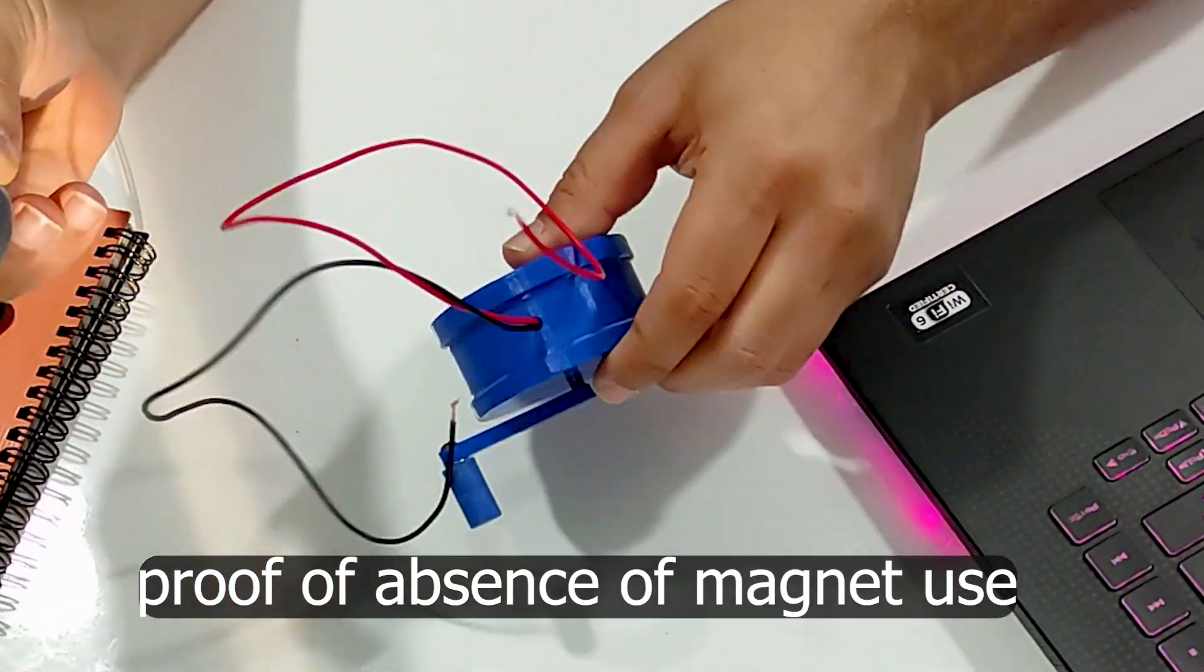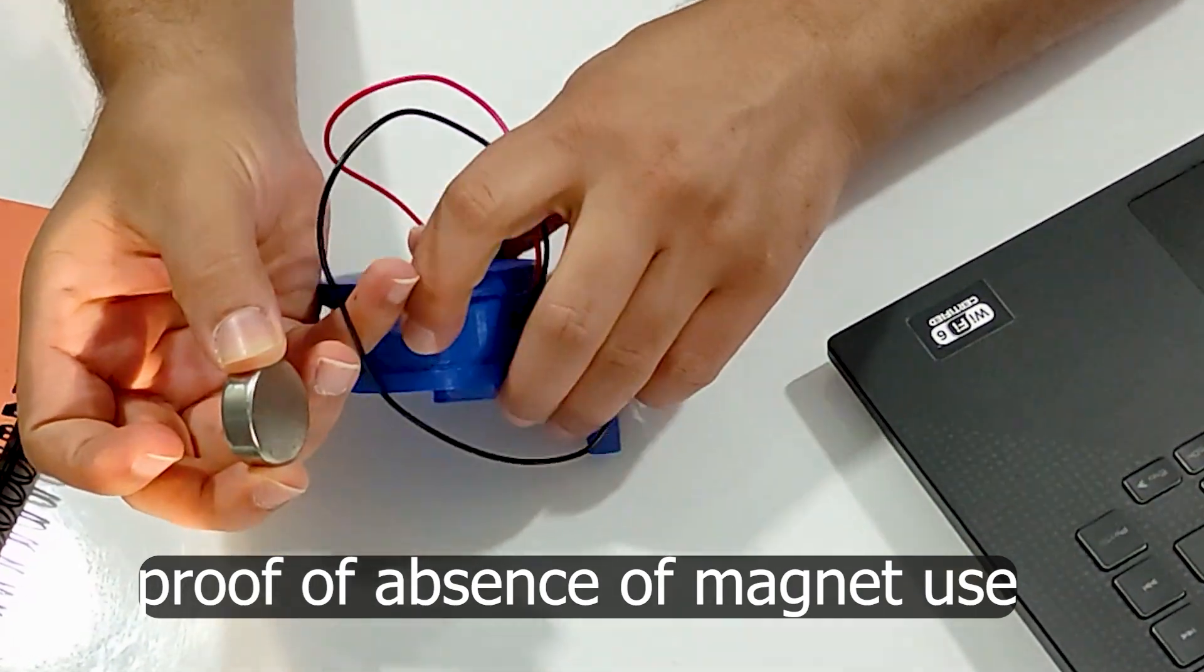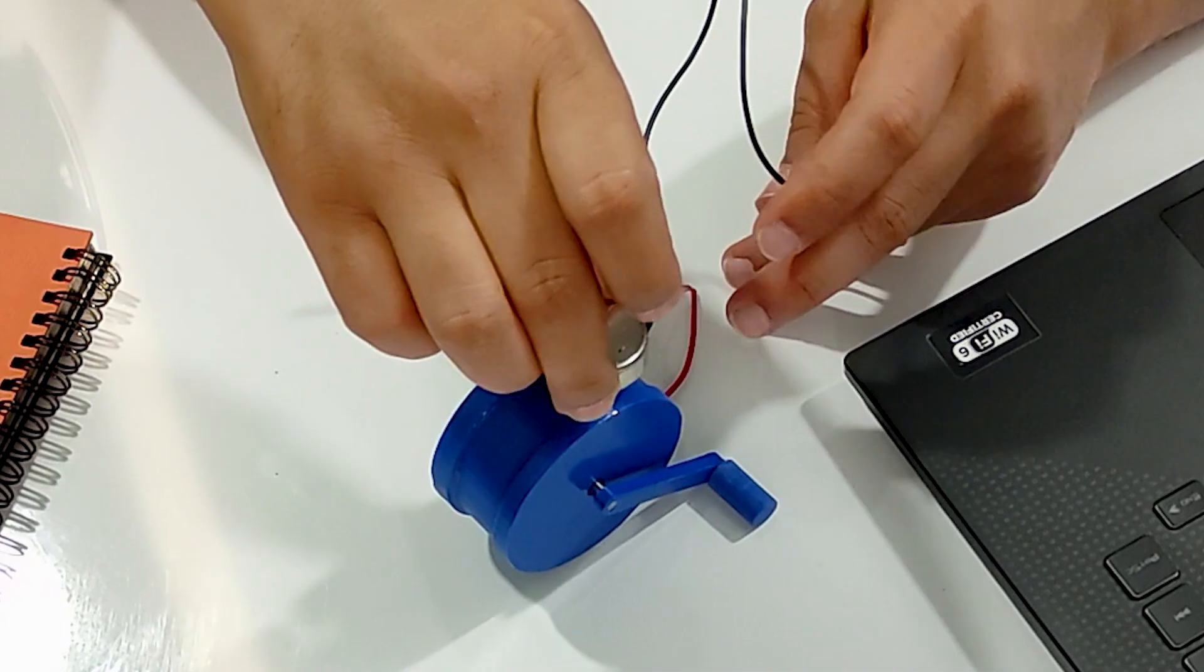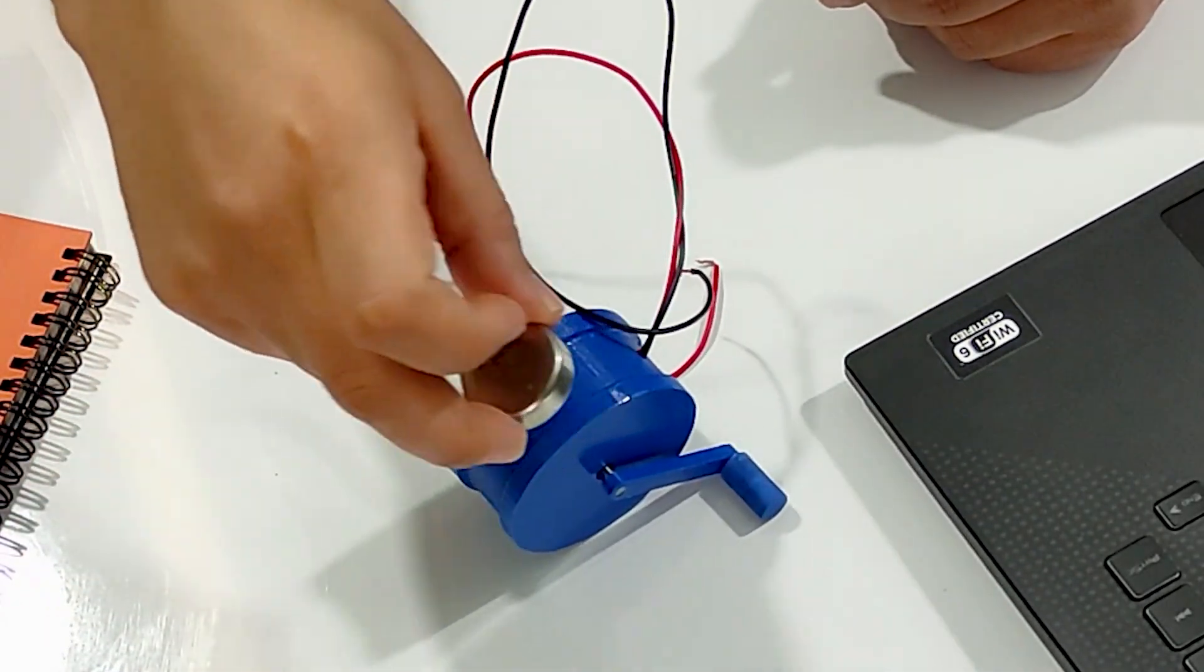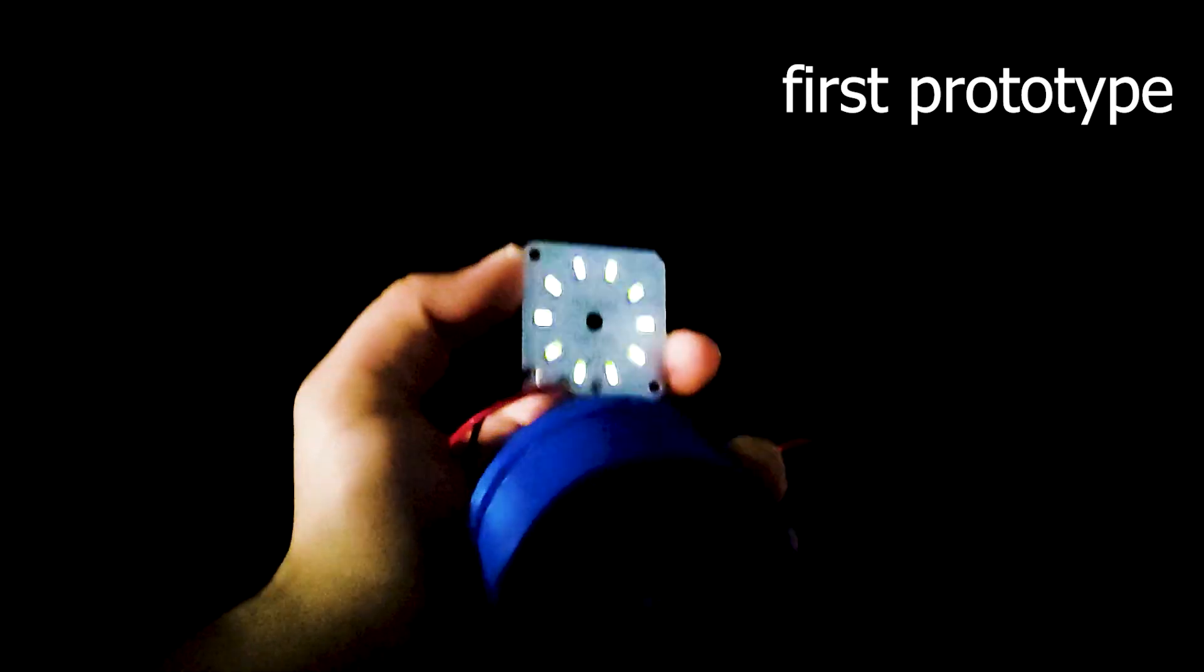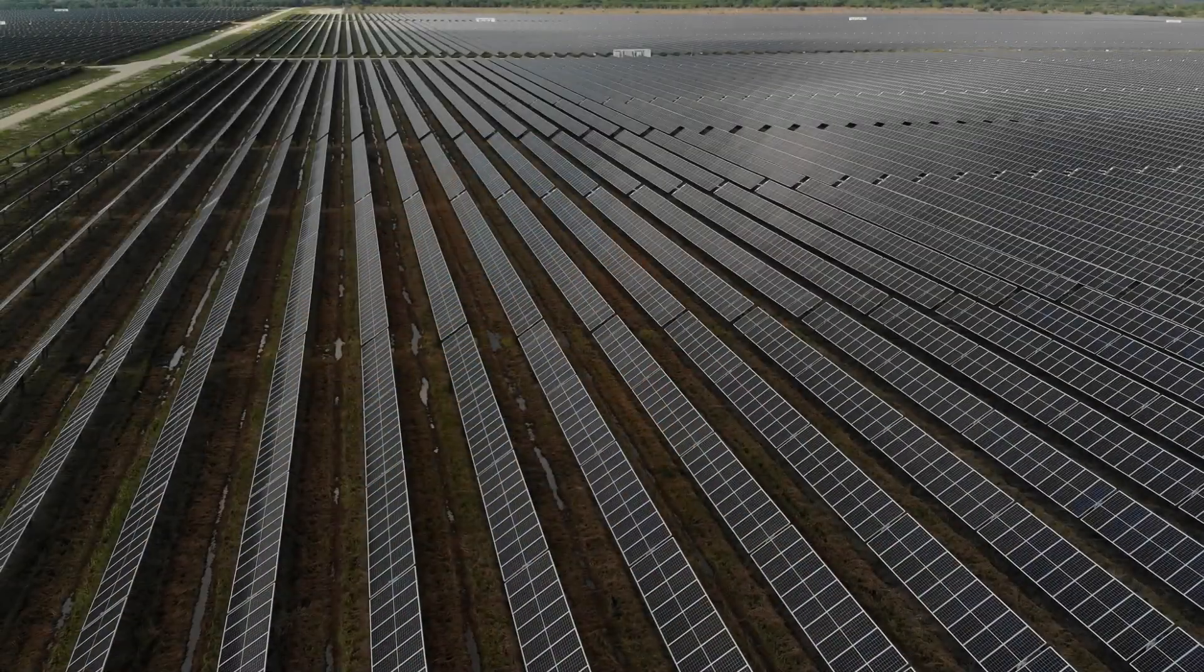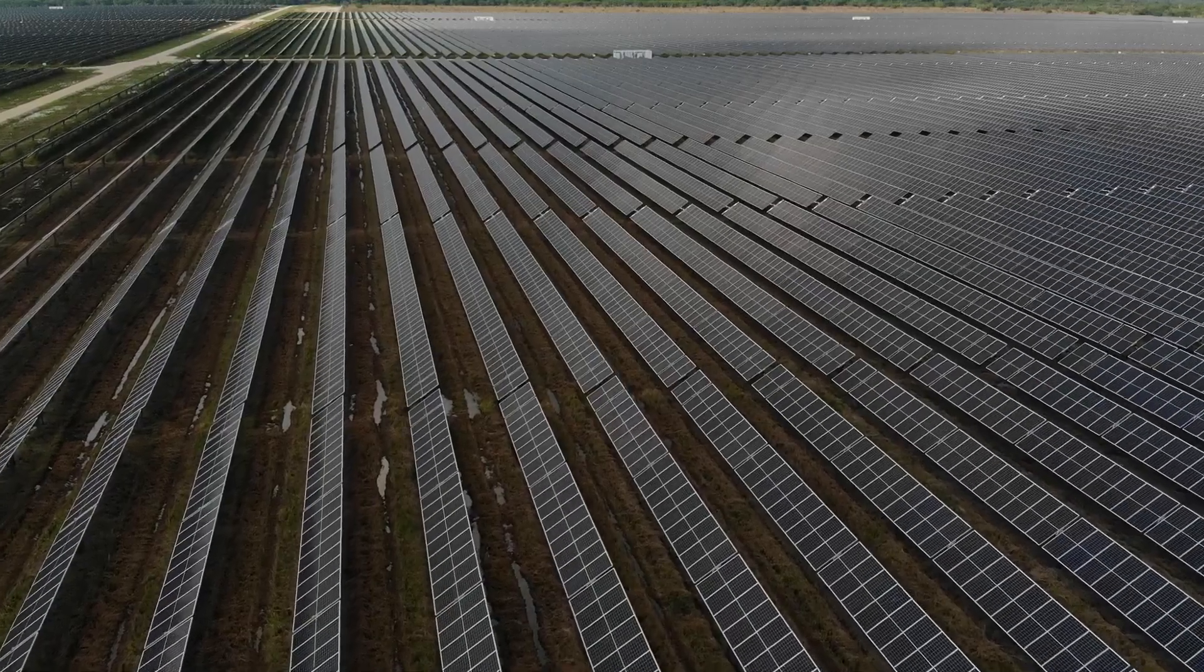The implications of this breakthrough are far-reaching. These generators promise greater durability, reduced maintenance, and a smaller ecological footprint. Moreover, the absence of coils and magnets streamlines the design, making these generators versatile and adaptable for a multitude of applications. As we stand on the cusp of a new energy era, these coil-less and magnet-free generators stand as a testament to human innovation, embodying the spirit of progress that propels us toward a cleaner, more efficient, and sustainable energy future.